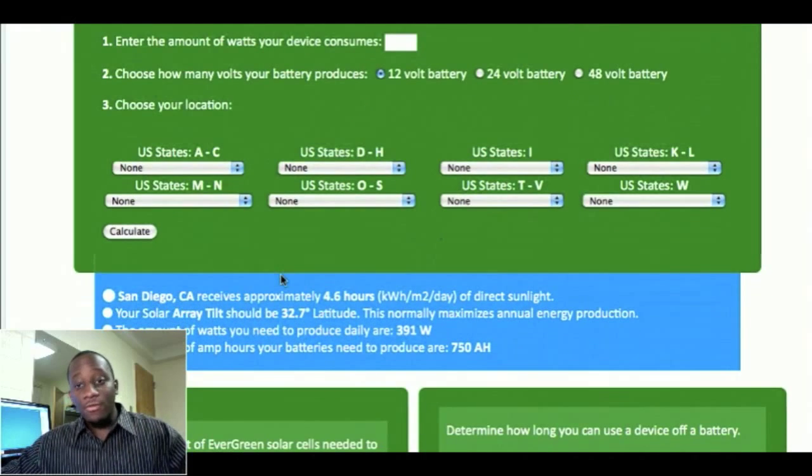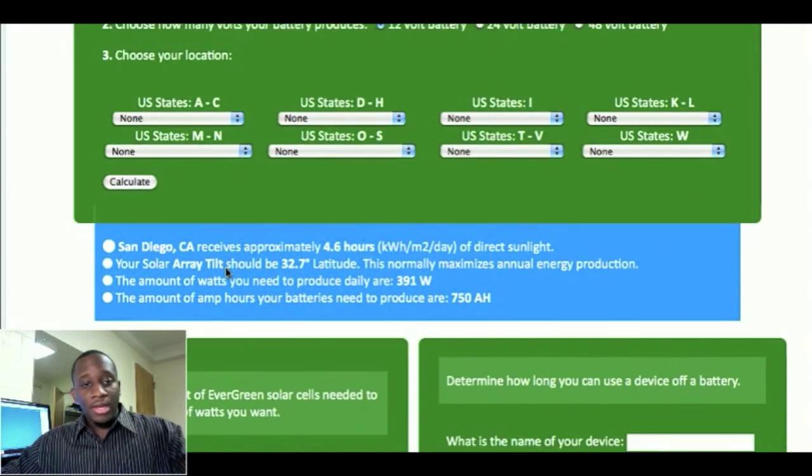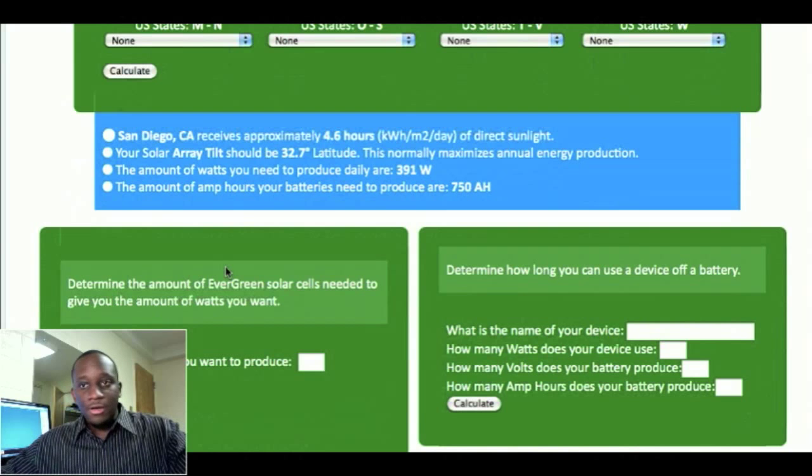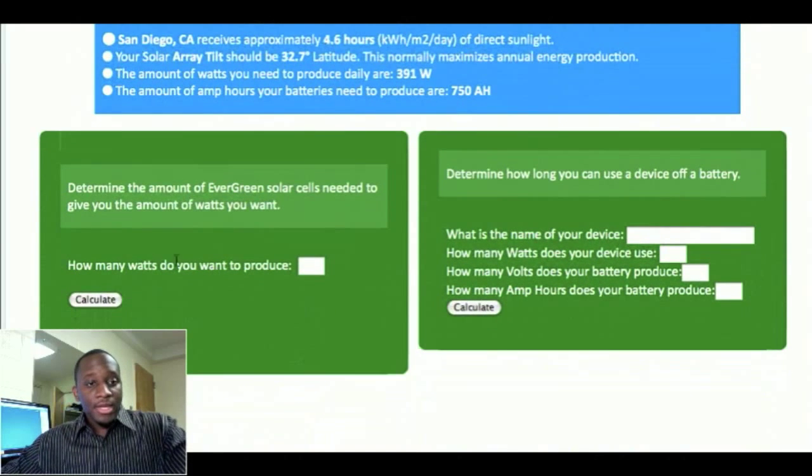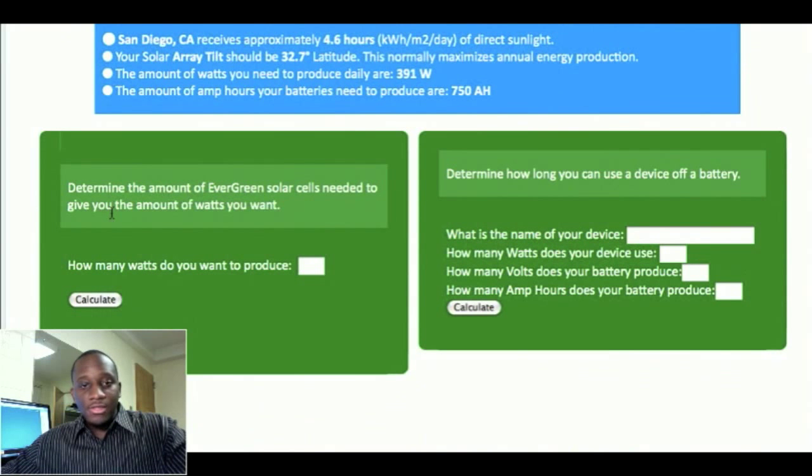So in a way, moving on, hopefully that is straightforward. And if it's not, comment, let me know. That's what this video is for, is just feedback. So here, determine the amount of evergreen solar cells needed to give you the amount of watts you want. This should be a straightforward question as well.